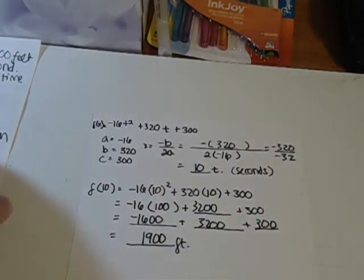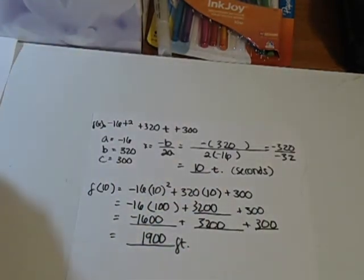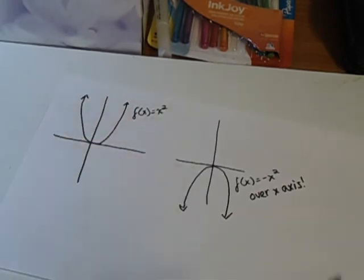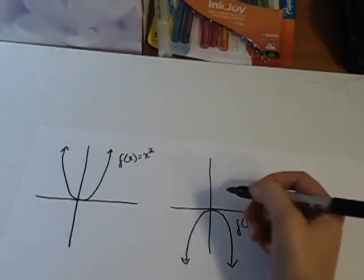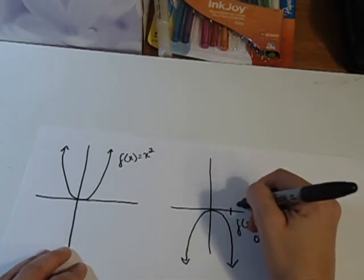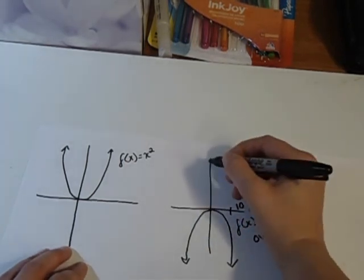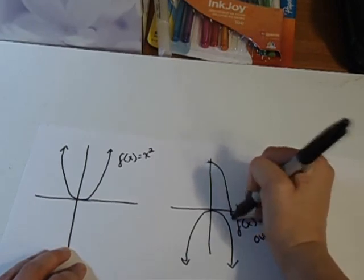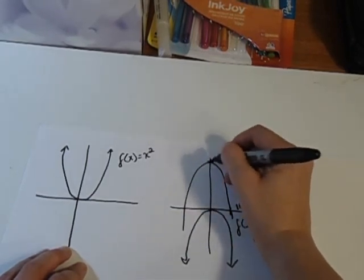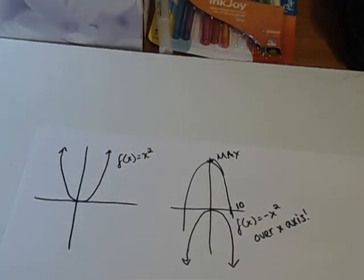If you look back at the visualization I had of the negative parabola, you'd have the 10 over here and the 1900 here. It would go down like that. So this would be its maximum, right around here somewhere.